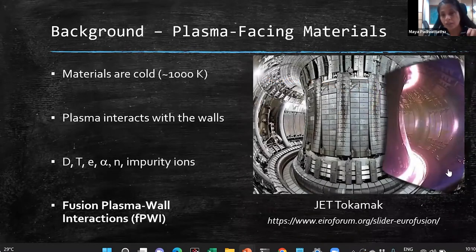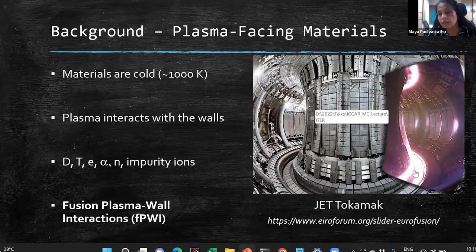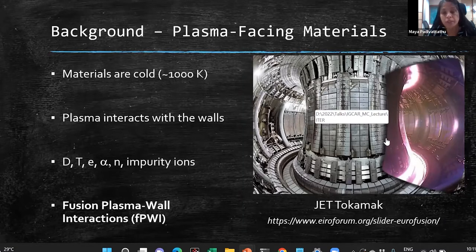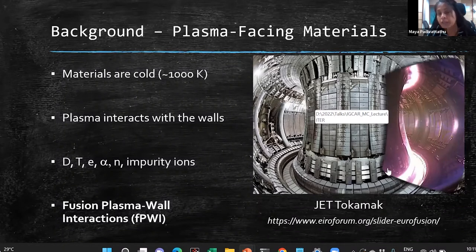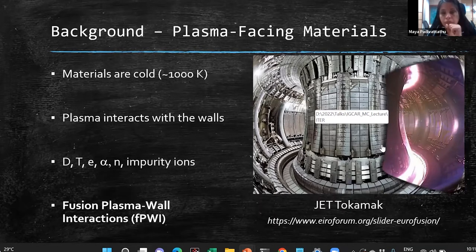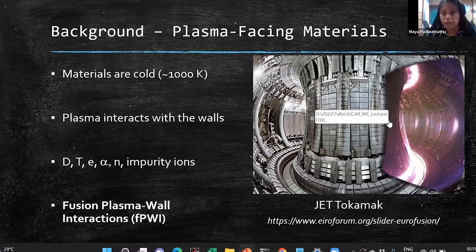If you take a picture of this, the pink color shows the radiation where the plasma is in contact with the material walls. Materials cannot be taken to very high temperature — they have a melting point. Tungsten, for example, has one of the highest melting points at roughly 3,400°C. You want to keep the material around 1,000–1,200 Kelvin operating temperature, while very high temperature, high-density plasma is interacting with the wall. We cannot get rid of this interaction, and particles coming from the plasma to the wall include deuterium and tritium ions, electrons, alpha particles, neutrons, and impurity ions.